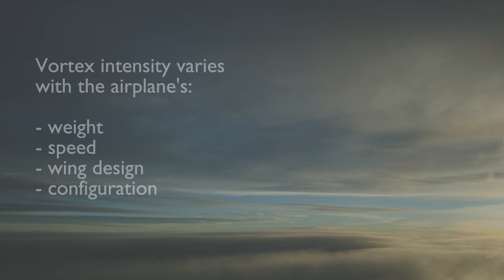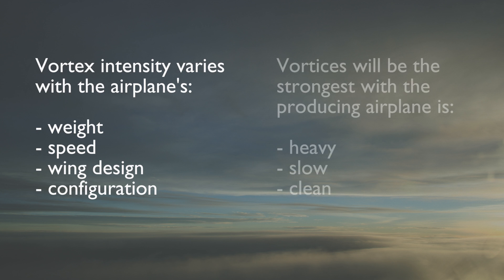The strength of an airplane's wingtip vortices depends on the amount of lift being produced by the wing. Vortex intensity varies with an airplane's weight, speed, wing design, and configuration. Wingtip vortices will be the strongest when the producing airplane is heavy, slow, and in a clean configuration, such as during takeoff.